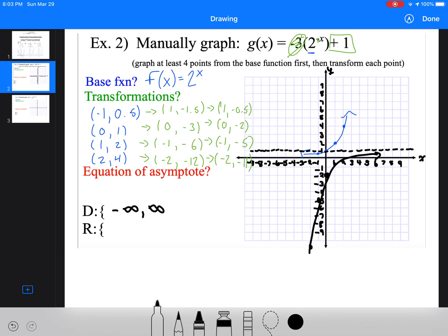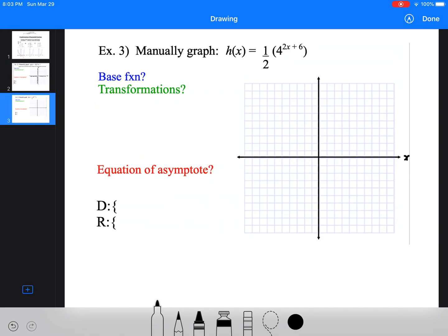We could find our x-intercept here and find exactly where it goes through, but for now, we'll just kind of leave it like that. So our domain, like always, is still negative infinity to positive infinity. Our range in this case is negative infinity to 1. And we're not including 1. It's just going to get ever so close to it. So that's our 4 points.